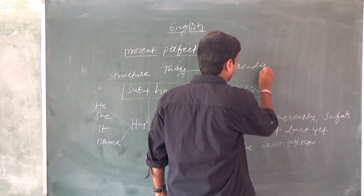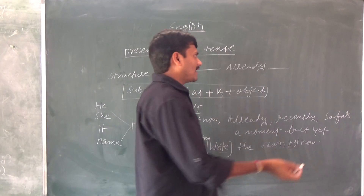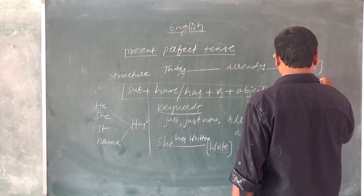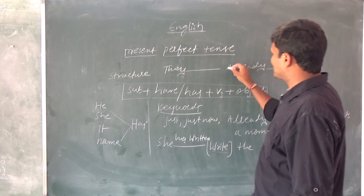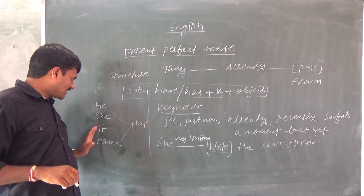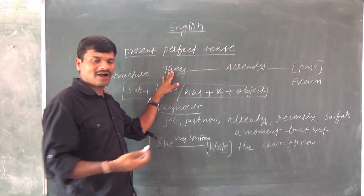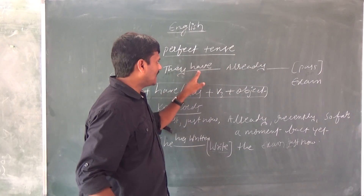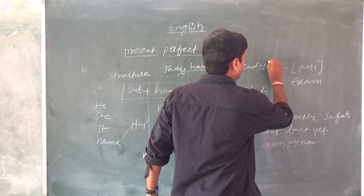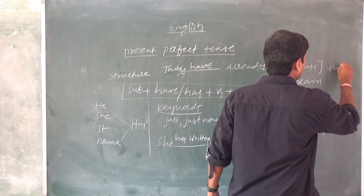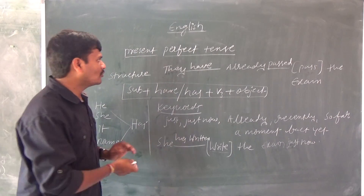Next example: They dash — recently or already — passed the exam. 'They' means plural, so 'have' will come automatically. The keyword 'already' is present, so: they have already passed the exam.